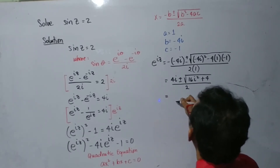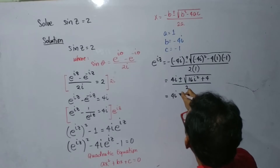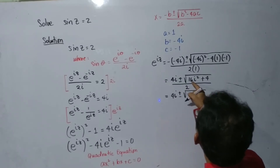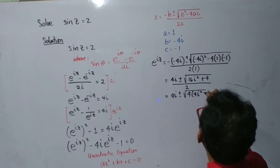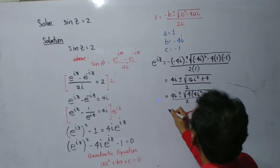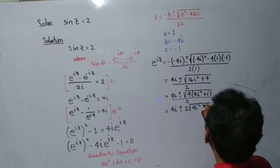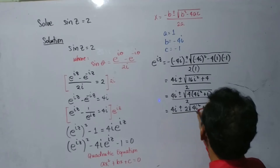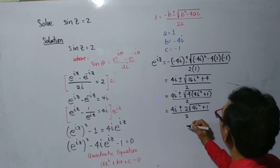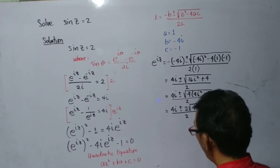We have 4i plus or minus the square root of 4 — you can factor out 4 — so we have 4 times i squared plus 1, all over 2. That gives 4i plus or minus 2 times the square root of i squared plus 1, all over 2. As you notice, i squared equals negative 1.